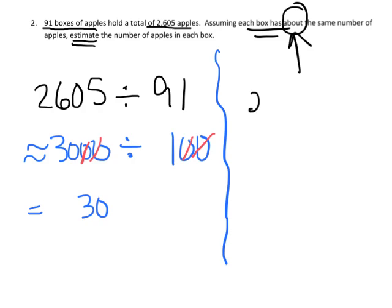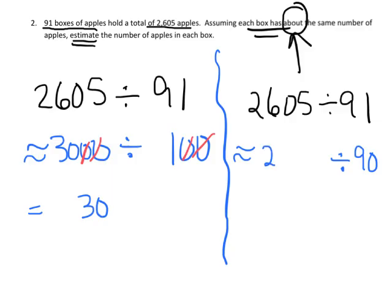I just thought of another one. 2,605 divided by 91. I could round and make this estimation. I can round that 91 to 90 and then a multiple of 9 or 90 is 2,700. So I can round this 2,605 to 2,700. That seems pretty unusual.